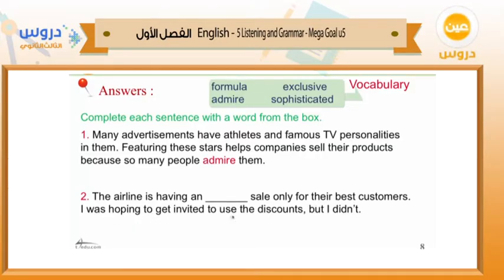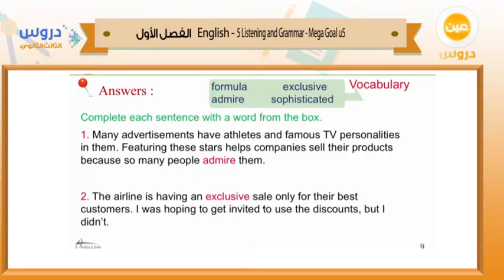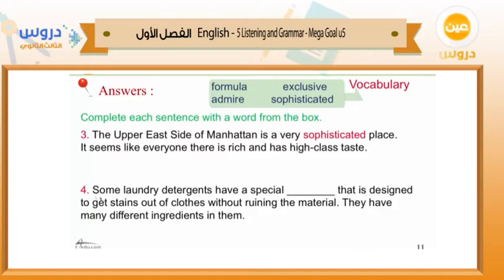Number three: 'The upper east side of Manhattan is a very _____ place, because it seems like everyone there is rich and has high-class taste.' The correct answer is 'sophisticated.' Number four: 'Some laundry detergents have a special _____ that is designed to get stains out of clothes without ruining the material — they have many different ingredients in them.' Since it refers to a combination of ingredients, the correct answer is 'formula.' These are the words related to the listening part.